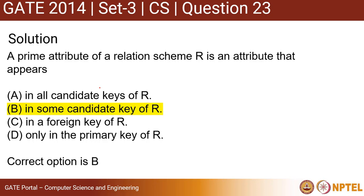Option B says: in some candidate key of R — yes, that is correct. Option C says: in a foreign key of R — no, that is not correct. Option D says: only in the primary key of R — a candidate key may or may not be a primary key, so D is also not correct. It may be correct in some cases but not always. So the correct option is B.